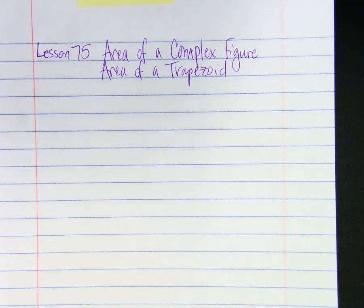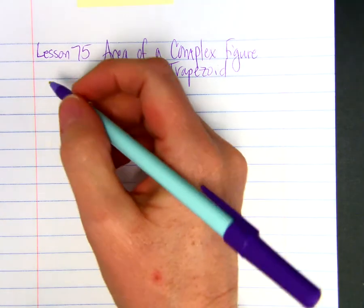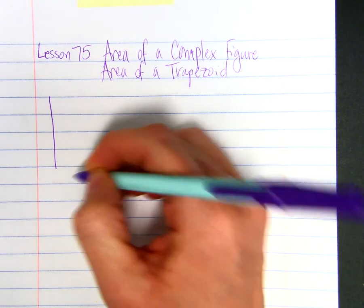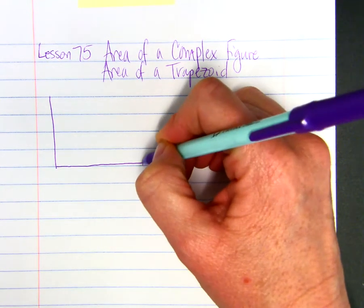So a complex figure is just a figure that is not your normal rectangle, square, rhombus, or parallelogram. For instance, if we had a pentagon that looked like this,